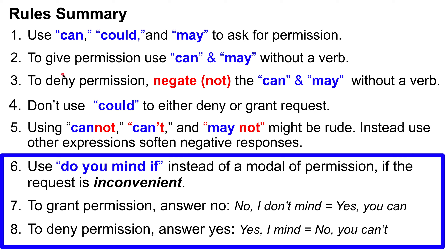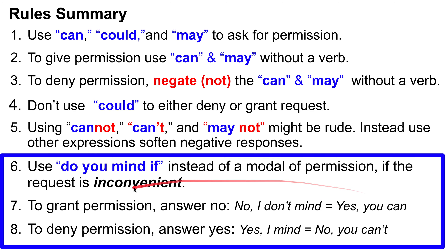To summarize: use 'can,' 'could,' and 'may' to ask permission. To give permission, use 'can' and 'may' without a verb. To deny permission, negate with 'cannot,' 'can't,' or 'may not' without a verb. Don't use 'could' to deny or grant. Using 'cannot,' 'can't,' or 'may not' might sound rude — use other expressions to soften negative responses. Use 'do you mind if' when the request is inconvenient. To grant, answer 'No, I don't mind'; to deny, answer 'Yes, I mind.'